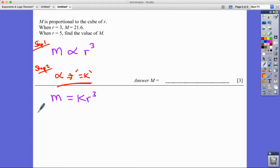And the next thing I'm going to do in step three is to find K by substituting given values. Now, you'll always be given values in the question, as I am. So I can see my second line of the question. It says when R equals three, M equals 21.6.